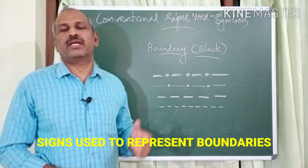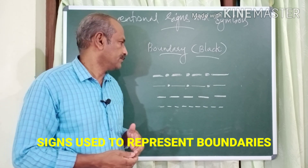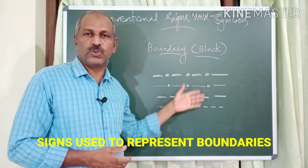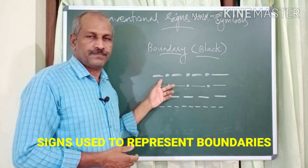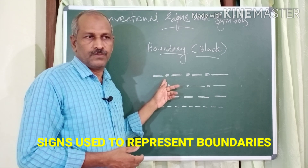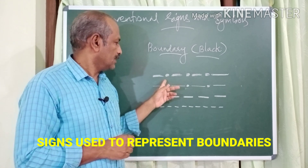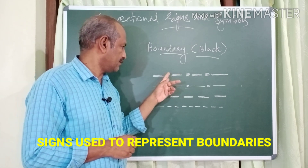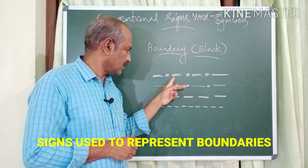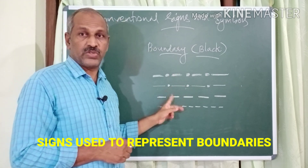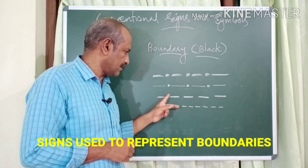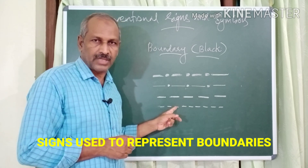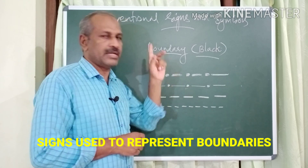Now let's see how boundaries are represented in the topographic map. All boundary symbols are in black color. The thickest symbol marks the international boundary, the next thinner one marks the state boundary, and progressively thinner and shorter symbols mark the district boundary and taluka boundary respectively.